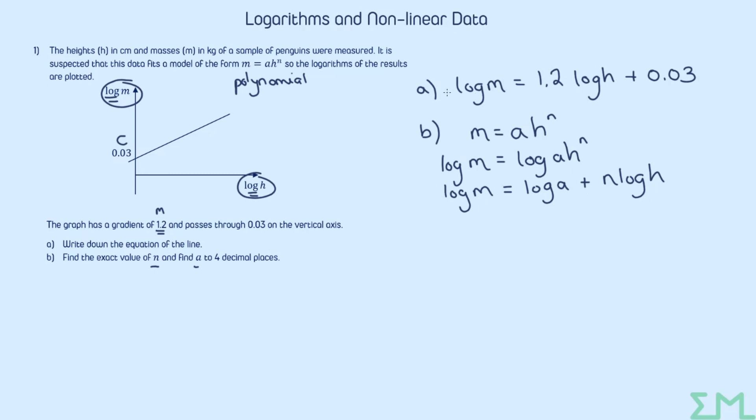Now we're going to make a direct comparison with the equation in part a. We have got a number here in front of log h. That must be equivalent to whatever we've got in front of log h in our equation here. So this tells us that straight away n is 1.2. And this seems correct because if we remember before we were talking about polynomial models, we had that the gradient was equal to the power in the polynomial. So here the gradient 1.2 equal to the power n in the original model.